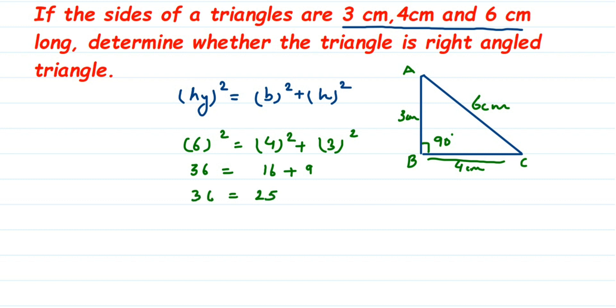Do you think that 36 is equal to 25? Are they equal? No, they are not equal. Which means this triangle is not a right angle triangle. With these sides, we cannot form a right angle triangle. The answer will be no. We cannot form a right angle triangle.